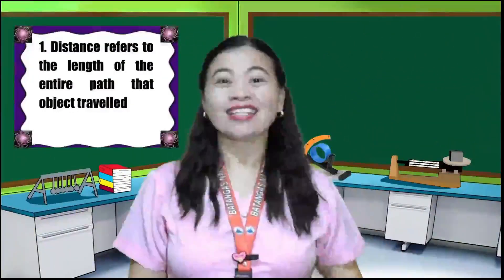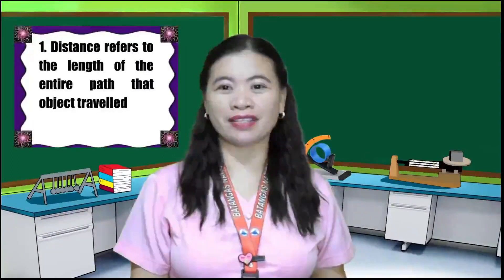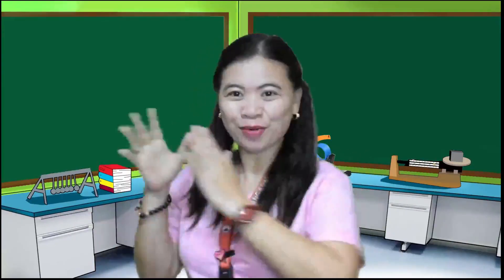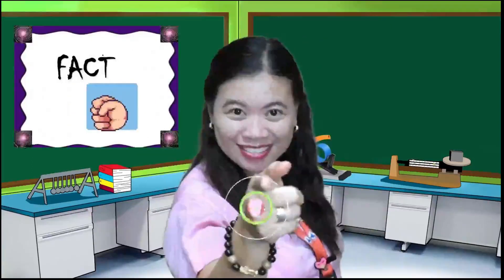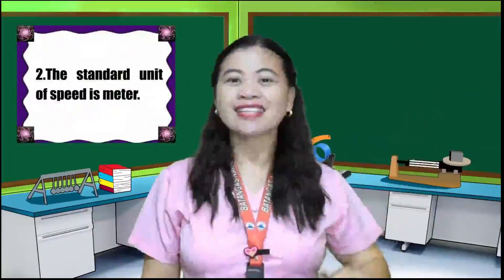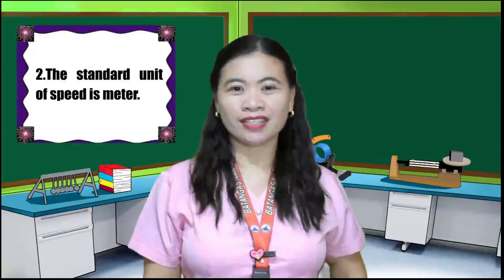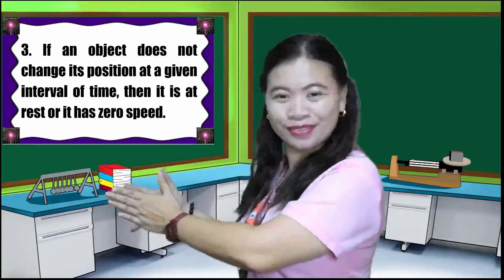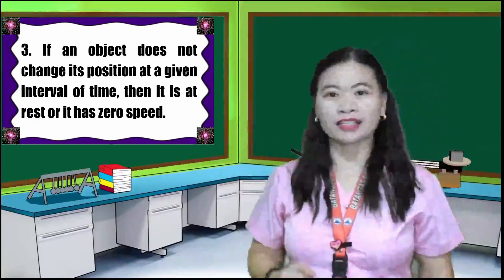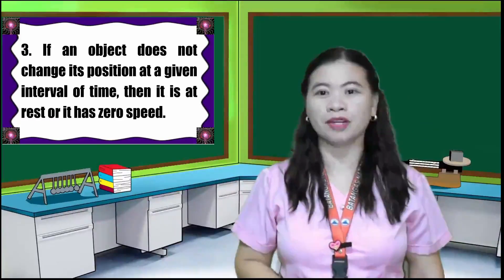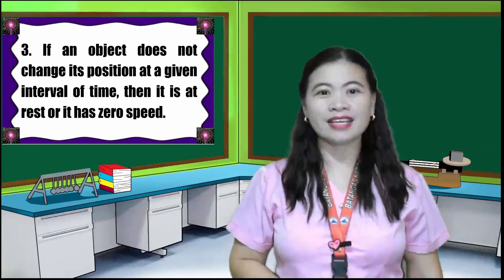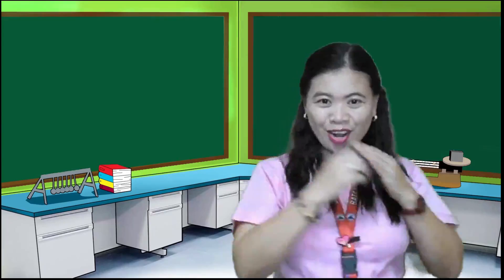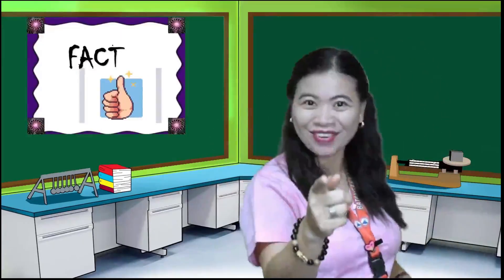Number one. Distance refers to the length of the entire path that object travel. Is it a fact or bluff? You got it right. Number two. The standard unit of speed is meter. Is it a fact or bluff? Number three. If an object does not change its position at a given interval of time, then it is at rest or it has zero speed. Is it a fact or bluff? You got it right.